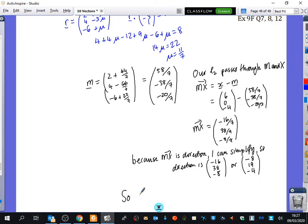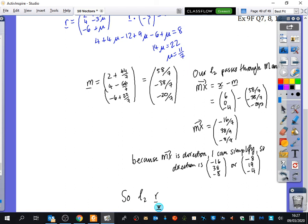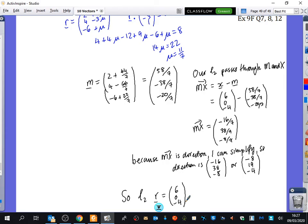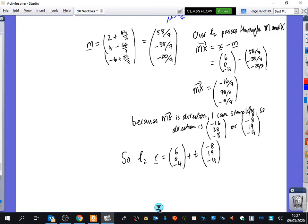The equation of L2 is r equals (6, 0, -4) plus t(-8, 19, -4). We've run out of letters, so I'll use t, which is common for this. There was me saying we could go home early, but here we are yet again. It's the longest thing you can do with vectors.